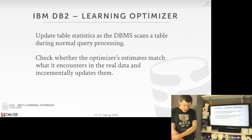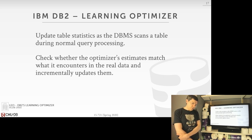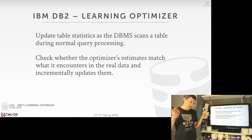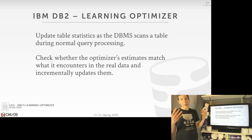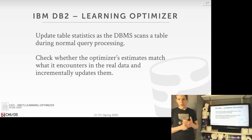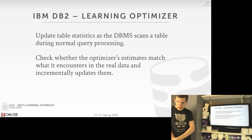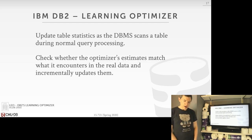IBM's Leo — the Learning Optimizer — is an example of a feedback loop used to improve cost model accuracy. The idea: keep track of cost model estimates when generating the query plan, and when running it, if estimates are way off, record information about what you're seeing in the real data. When the query completes, return the result to the user but also update the cost model statistics with the new information collected. IBM's Leo shipped in production in DB2 — one of the early commercial examples of adaptive query processing.